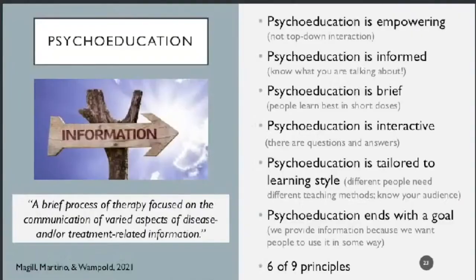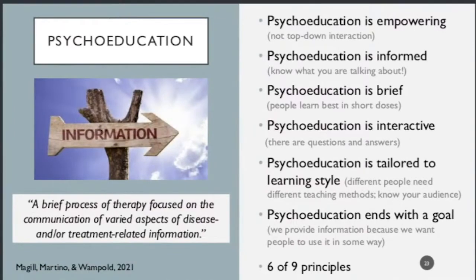The first process is providing psychoeducation — simply delivering information. It's defined as a brief process of therapy focused on the communication of varied aspects of disease and/or treatment-related information. Reflect on your own experience: have you been to a doctor or been a psychotherapy client? How was information provided to you? Was it engaging, empowering? Was there an interactive back-and-forth? Did the person ask what you already knew before launching into an extensive lecture? These are the kinds of things that should happen in high-quality psychoeducation.